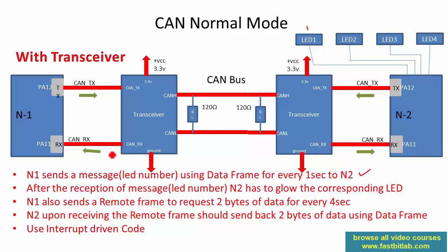N1 also sends a remote frame to request two bytes of data every four seconds. N2, upon receiving the remote frame, should send back two bytes of reply using a data frame, and N1 will receive that data frame and display it.